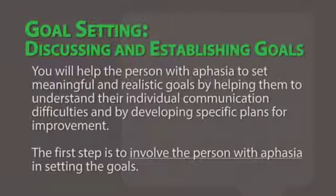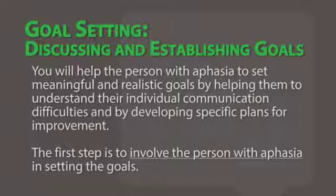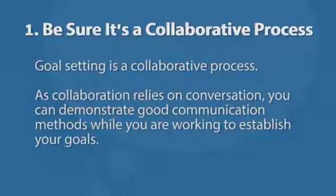Goal Setting: Discussing and Establishing Goals. You will help the person with aphasia to set meaningful and realistic goals by helping them understand their individual communication difficulties and by developing specific plans for improvement. The first step is to involve the person with aphasia in setting the goals. Number 1: Be sure it's a collaborative process. Goal setting is a collaborative process and, as collaboration relies on conversation, you can demonstrate good communication methods while working to establish your goals.